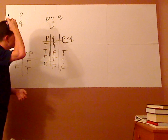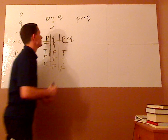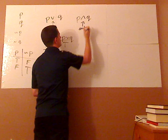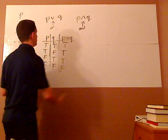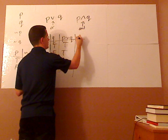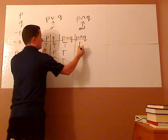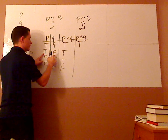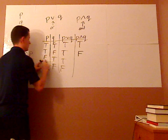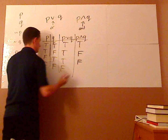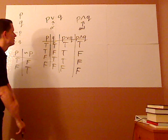Then you have another symbol that looks like a caret facing up — this is the AND symbol. In order for AND to be true, both of them have to be true. Using the same truth table with P and Q: true and true is true; true and false is false because both have to be true; false and true is false; and false and false is false.